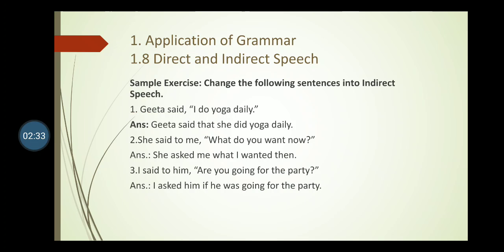Exercise sentence one: Gita said, 'I do yoga daily.' Here 'said' is the reporting verb in past tense. It is direct speech because it has inverted commas. To change: 'said' is assertive, so conjunction 'that' is used. 'I' changes to 'she', and 'do' changes to 'did' — simple present to simple past. Answer: Gita said that she did yoga daily.